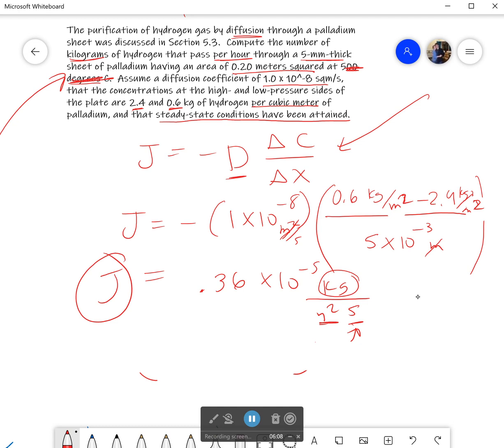So, if I do that, and I'm very careful, I'll get mass equals J times A times t. I'm just going to keep J as this to save room. And then, the area would be 0.2 meters squared. And the time, well, I need to do it per hour, so I'm not going to get rid of time. I'm going to just change it to hours, and it's 3600 seconds per hour. Multiplying all that out in my calculator gives me 2.6 times 10 to the negative third kilograms per hour.